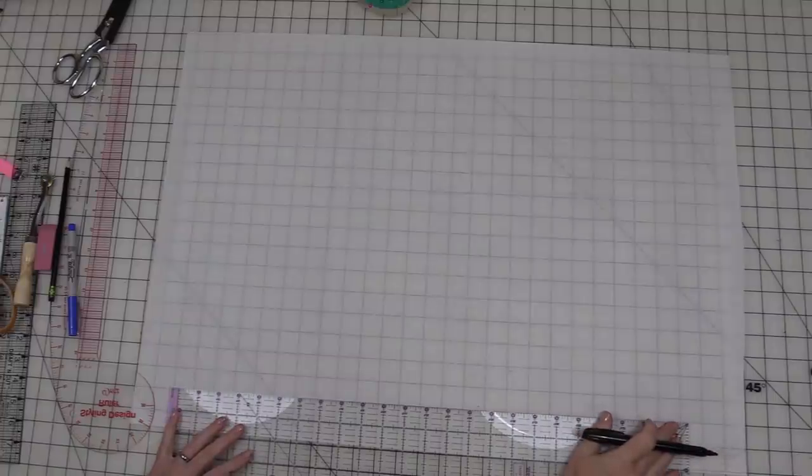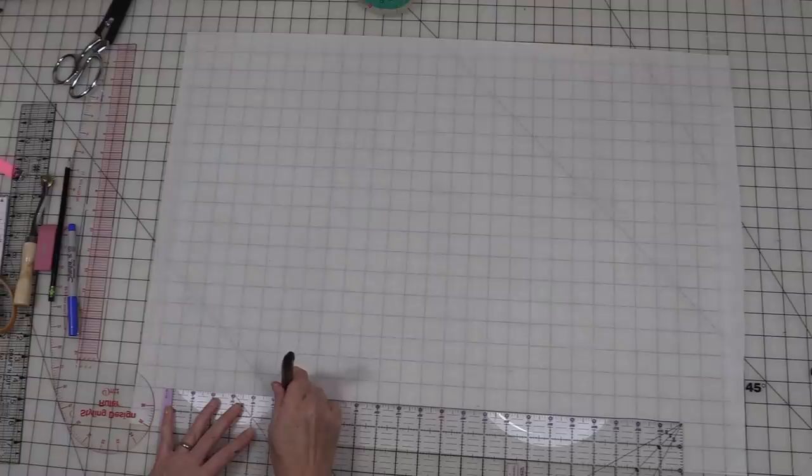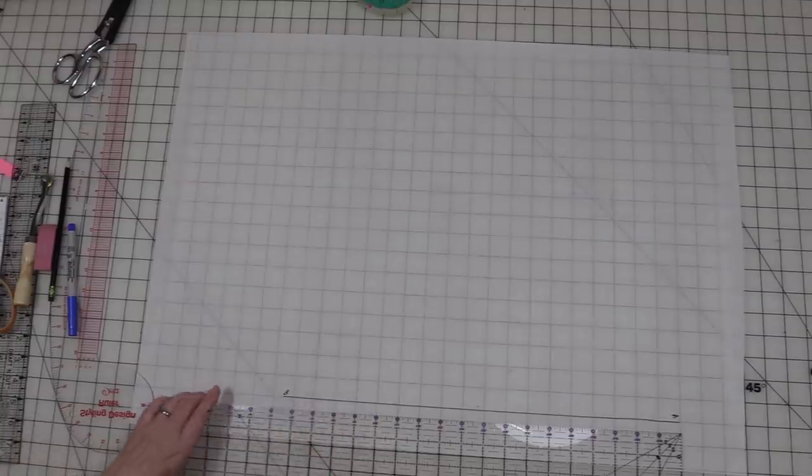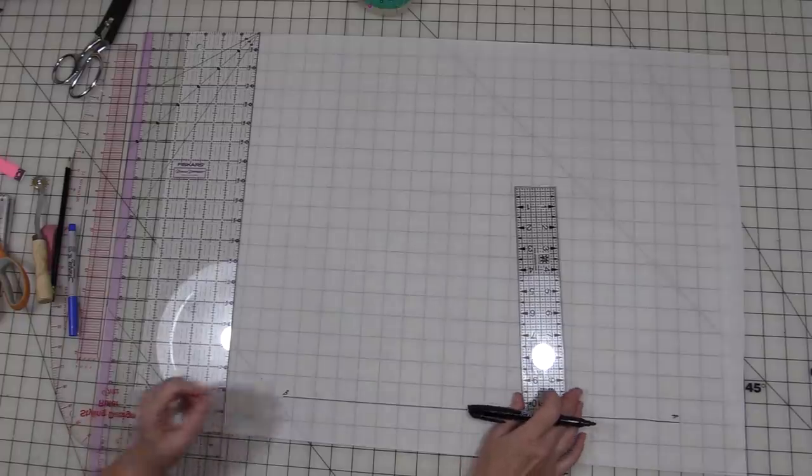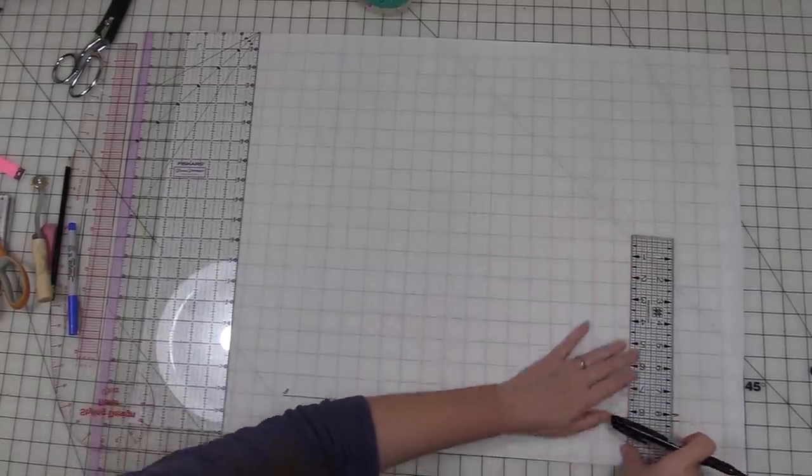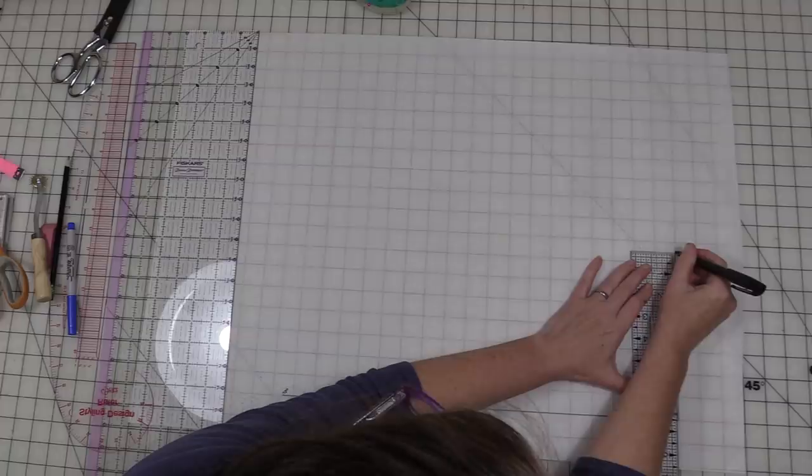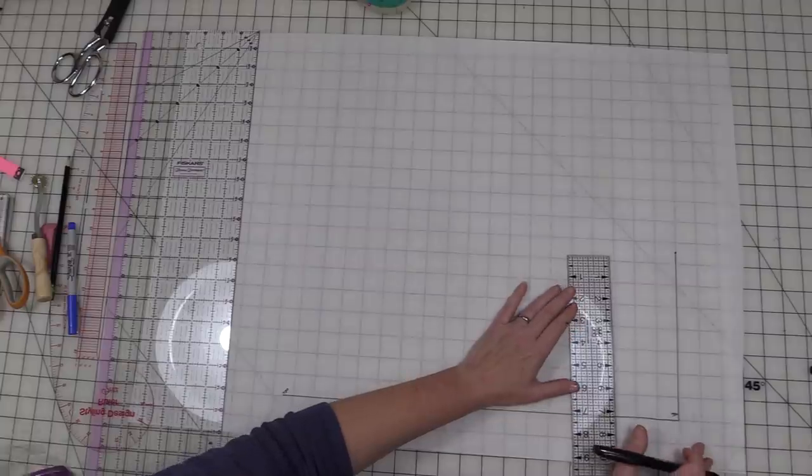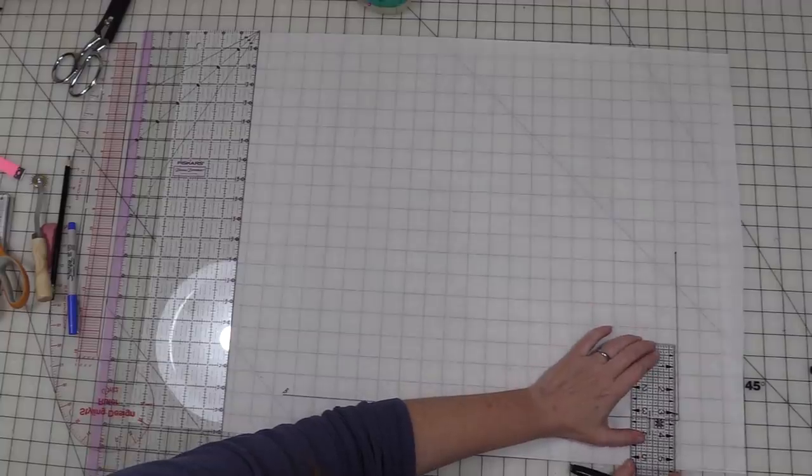First measurement that we're going to use is back of neck to waist plus a half an inch. So for me that is 18 and a half inches and I like to label as I go. So we've got A and we've got B. Next measurement is going to be your half shoulder measurement and that's that measurement you took across your shoulders. So for me it's seven and a half and we'll make a little mark there. Next measurement we want to mark is our neck measurement divided by four. So you're going to take whatever your neck measurement was and divide it by four. For me that's going to come out to three and a quarter.